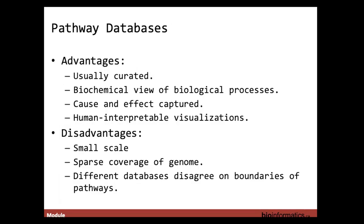Pathways have several advantages. They are typically curated — a researcher reads a paper, identifies the knowledge within it, and translates it into a computable form. That data becomes available through a database online. Pathways provide a biochemical view of a biological process, can capture cause and effect, and traditionally have some form of human-interpretable visualization, whether a textbook-like illustration or a more technical network view.